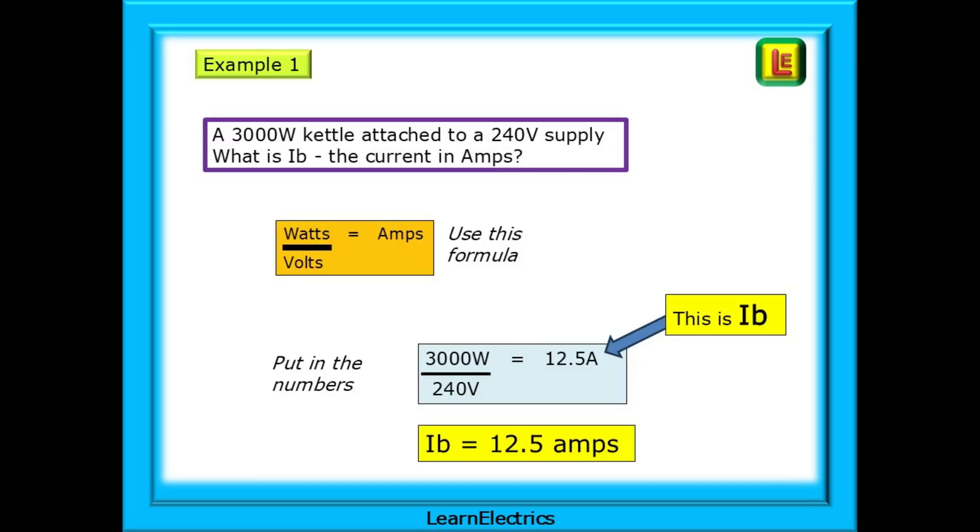Let's do an example calculation. We are asked, a 3000 watt kettle is attached to a 240 volt supply. What is IB, the current, in amps? Use the formula shown and put in the numbers given in the question. 3000 watts divided by 240 volts is 12.5 amps. That is our answer. IB, the design current, is 12.5 amps.